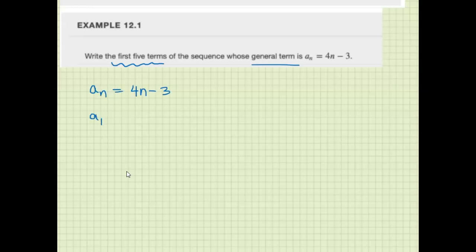We have aₙ = 4n - 3. We want a₁, a₂, a₃, a₄, and a₅. The sequence is like a function where we plug in the counting numbers: 1, 2, 3, 4, 5. Here we just want the first five.